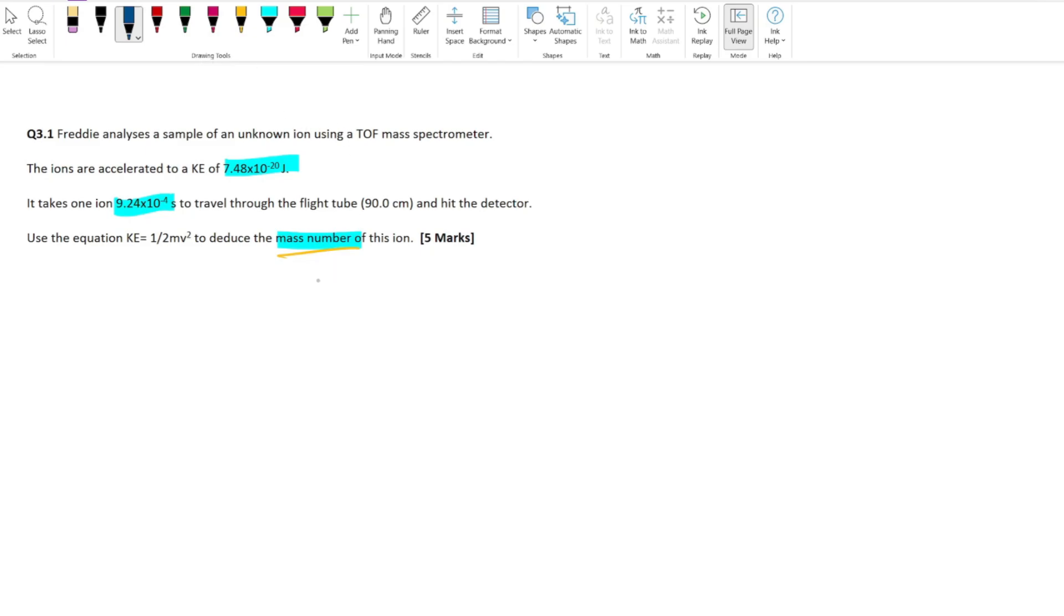Let's look at what variables we've been given. We have our equation KE equals half mv squared. We've got KE. We're looking for the mass number, which is not the same as mass m, but for the purposes of time of flight mass spec, you can assume that the mass number is just the same as the relative atomic mass. Do we have our mass? No. Do we have our velocity? No. We're kind of screwed here because in order to rearrange this equation, we need two of the three variables, but we only have one.